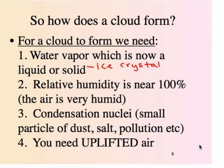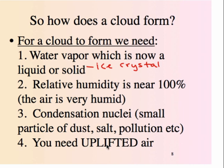So how does a cloud form? For a cloud to form, you need four things. First, water vapor — it's going to become a liquid or solid cloud. Second, relative humidity near a hundred percent. Third, condensation nuclei — small particles of dust, salt, pollution, or dandruff so that water vapor can condense around them or form solid ice crystals. Fourth, uplifted air. If you have those four things, you are going to form a cloud, and that will be covered in Mr. Kimpton's video.